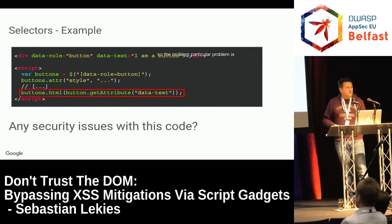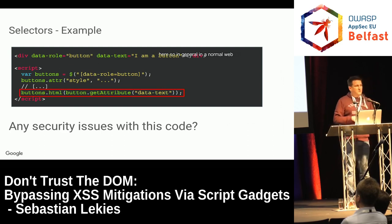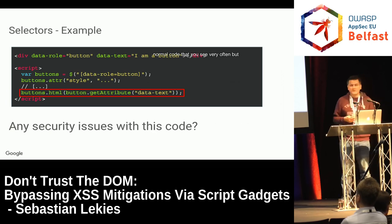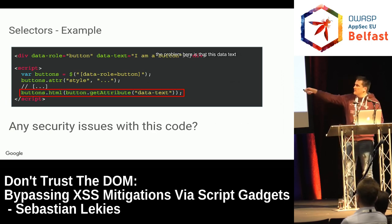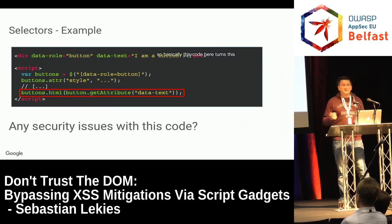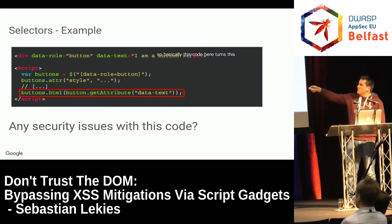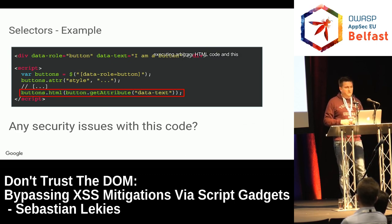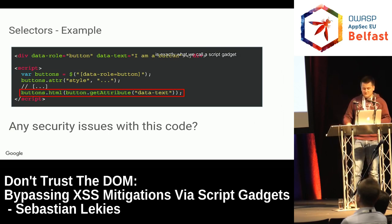The security problem is here. In a normal web application or library this would not be considered a security issue — it seems like normal code you see very often. But the problem is that this data-text attribute is actually rendered as HTML. This code turns the data-text attribute into a magic property that suddenly has the capability of executing arbitrary HTML code. This is exactly what we call a script gadget.